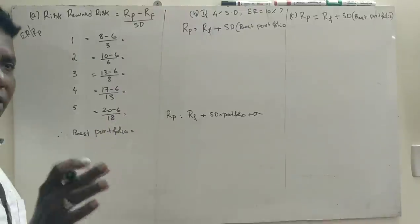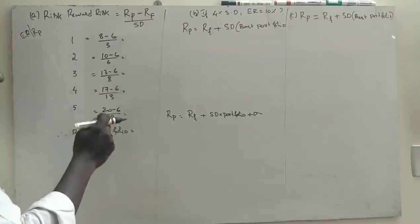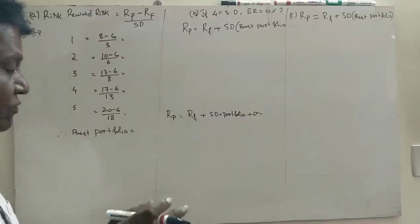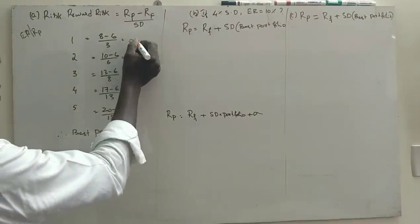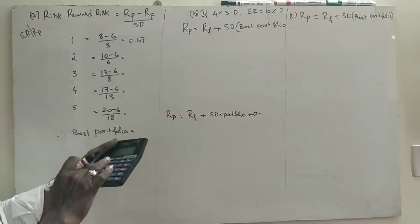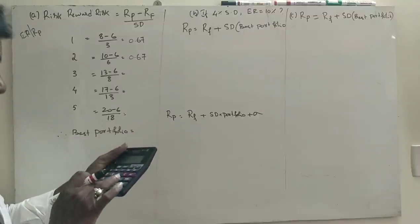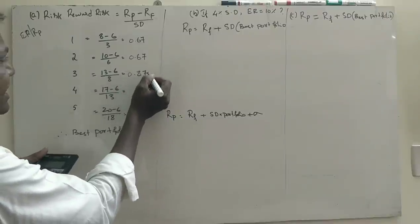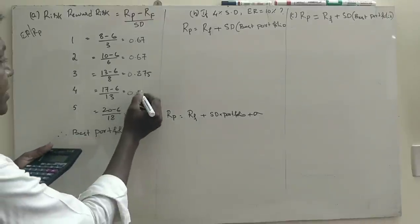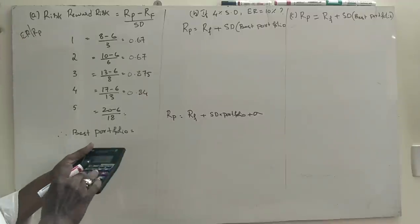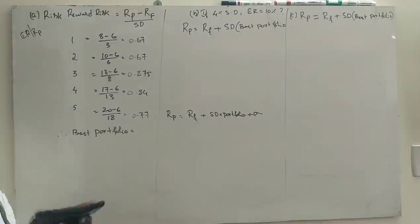The standard deviations are 3, 6, 8, 13, 18. Now calculating the reward-to-variability ratio for each portfolio: 2 divided by 3 = 0.67, 4 divided by 6 = 0.67, 7 divided by 8 = 0.875, 11 divided by 13 = 0.84, 14 divided by 18 = 0.77.